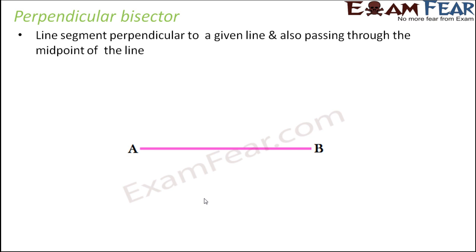Let's see how we draw a perpendicular bisector. We are given a line segment AB and we have to draw its perpendicular bisector. That means we have to draw a perpendicular to AB such that it passes through a point which lies exactly between A and B — that is, the midpoint of AB — so that point P divides AB into two exactly equal halves.